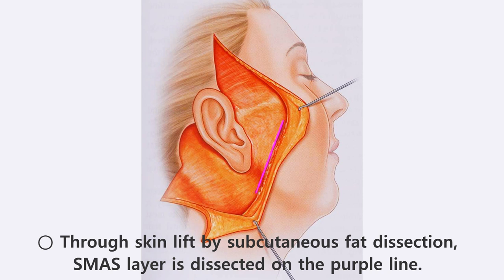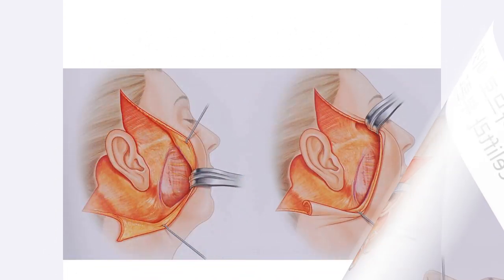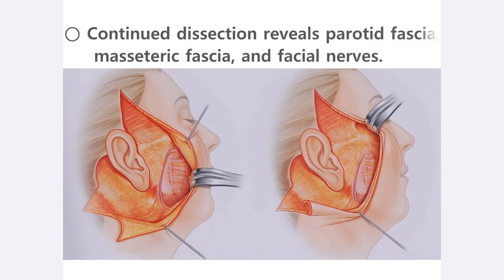After lifting the skin by dissecting the subcutaneous fat layer, the area marked by a purple line can be seen. On this line, dissection continues under the SMAS layer up to the mouth corners. As you can see in the picture, dissection made beneath the SMAS layer is called deep plane facelift. As dissection continues forward, many important structures are exposed — there are fascia, parotid gland, and facial nerves. These must be well protected in order to avoid facial deformation later on.